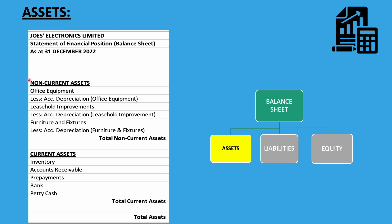Fixed assets, such as buildings, motor vehicles, and plant and machinery, are prime examples of non-current assets. They're also stated at cost, which is the original price they were purchased at. Current assets are always used and are expected to be realized in the company's normal course of business trading. Current assets can be used for the company's immediate needs, or can be converted into cash within one year. Examples include inventory, accounts receivables, and cash — these are current assets.